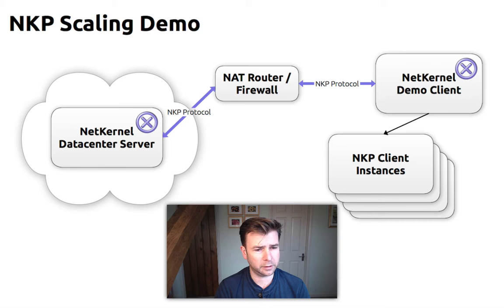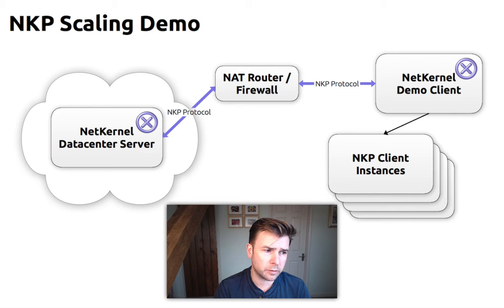When the home hub — or the NKP client in this case — starts up, it tries to establish a connection with the data center which it will maintain even through network outages and restarts. It reflects its state back up to the data center, and the data center can also send messages back down to the client to control that light switch.